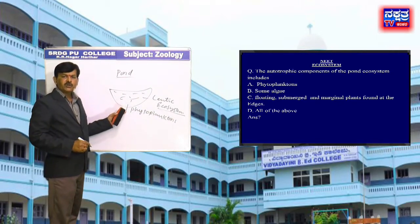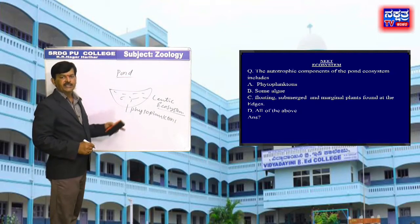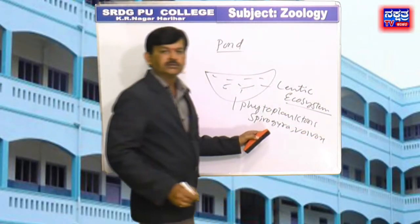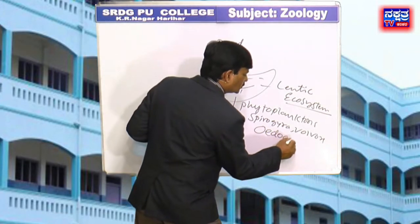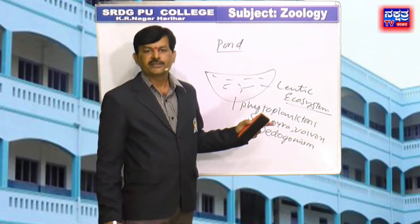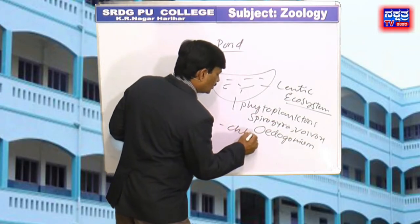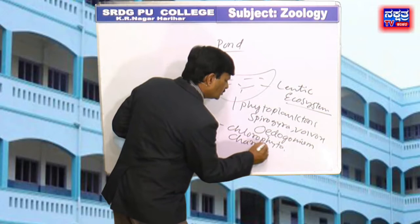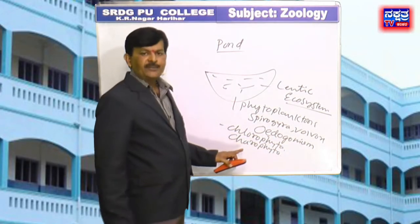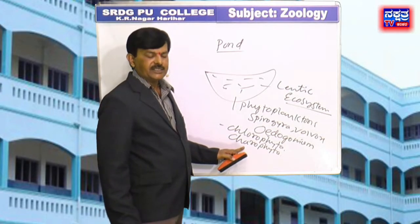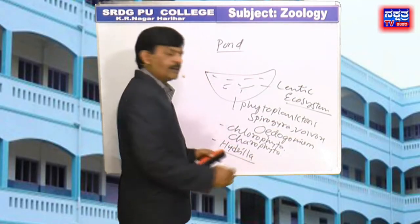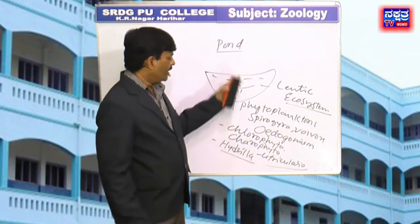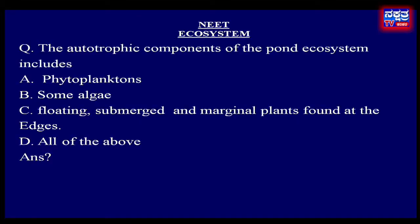Phytoplanktons are microscopic autotrophs which fix solar energy. Examples include Spirogyra, Volvox, and Oedogonium. Also included are submerged plants like Hydrilla and Utricularia. Based on these points, Option D — all of the above — is the right answer.